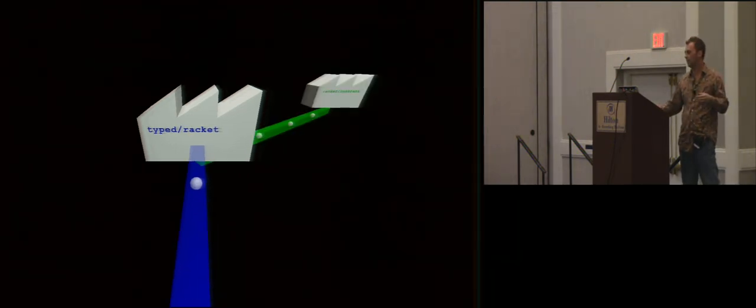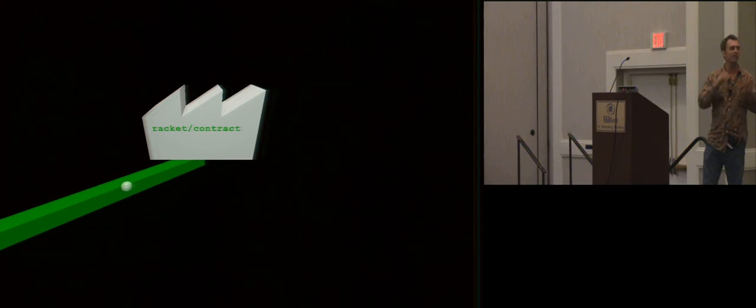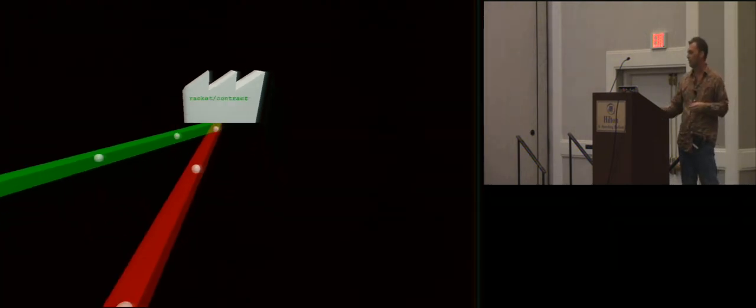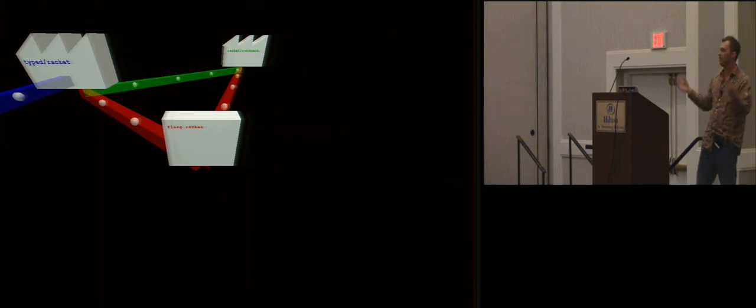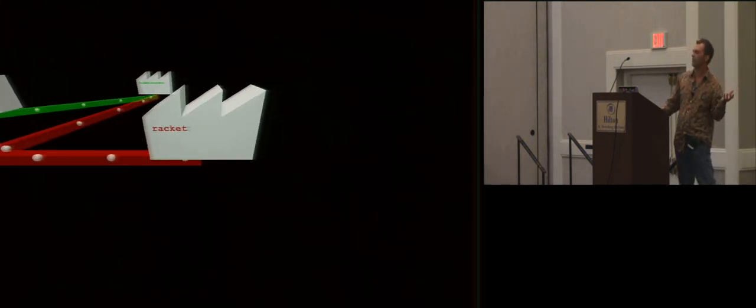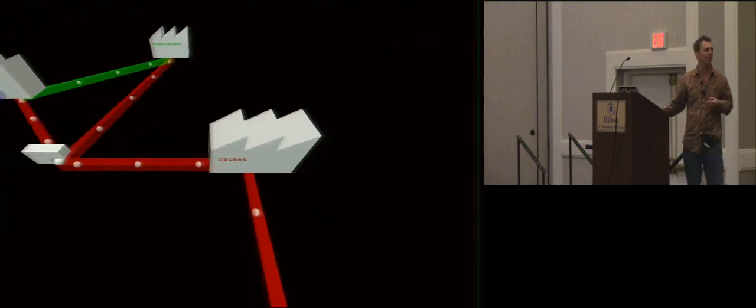Furthermore, TypedRacket needs to make sure that typed programs can interact with untyped programs. So it needs to generate some contracts to guard that interaction, which it does by using the contract language. All of these fragments are things that go to the untyped Racket language. TypedRacket compiles to untyped. The contract stuff generates untyped Racket. These fragments that it generates still refer to runtime support for TypedRacket and contract.